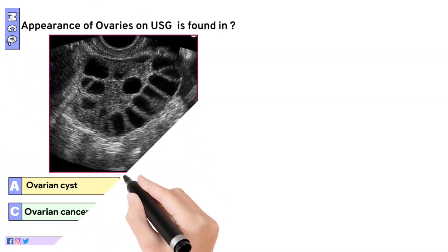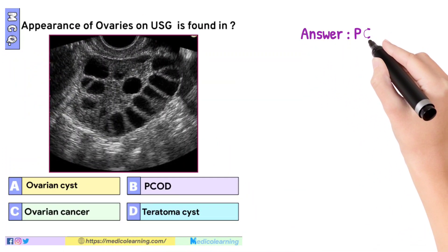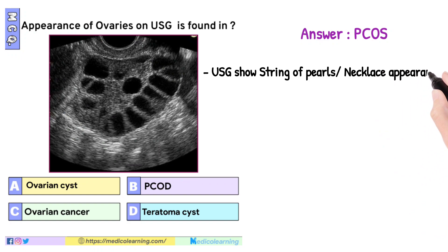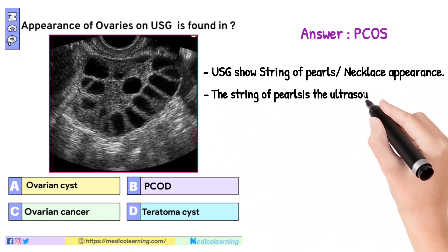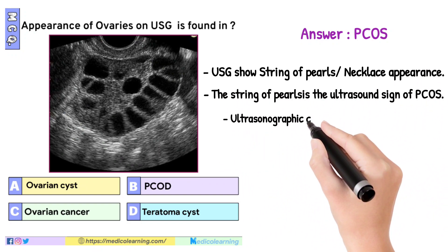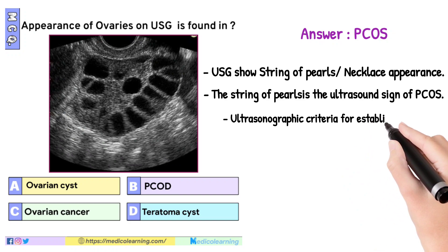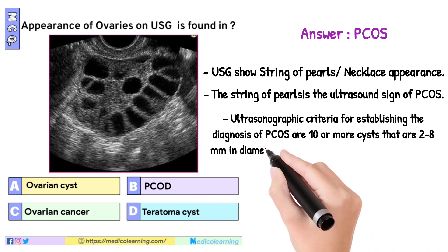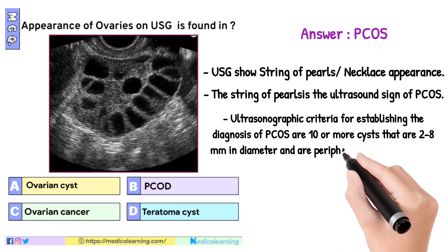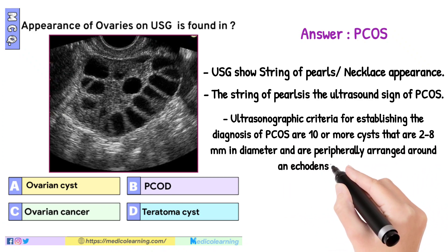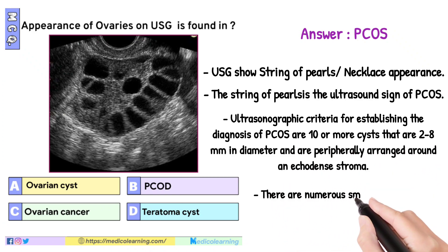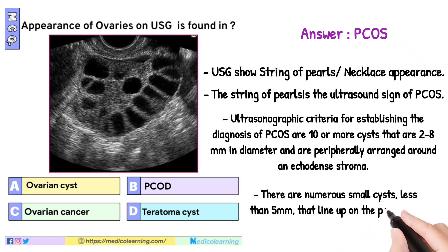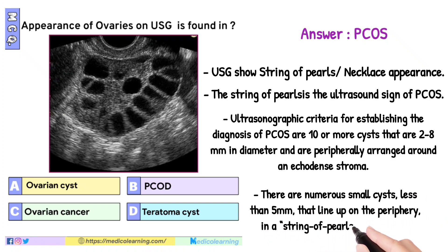In this question, the answer is PCOD. The USG shows a string of pearls or necklace appearance. The string of pearls is the ultrasound sign of PCOS. Ultrasonographic criteria for diagnosis include 10 or more cysts that are 2 to 8 mm in diameter, peripherally arranged around an echo-dense stroma. Numerous small cysts, less than 5 mm, line up on the periphery in a string of pearls appearance.